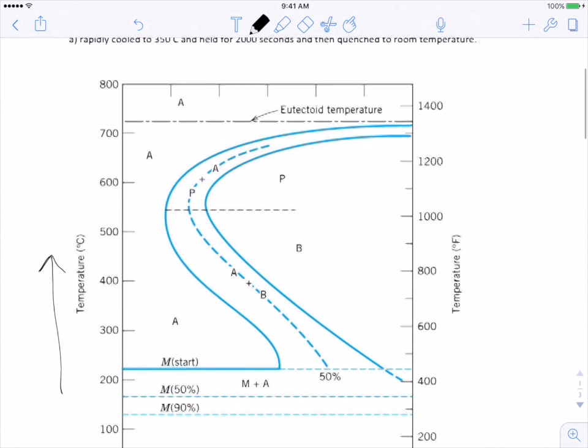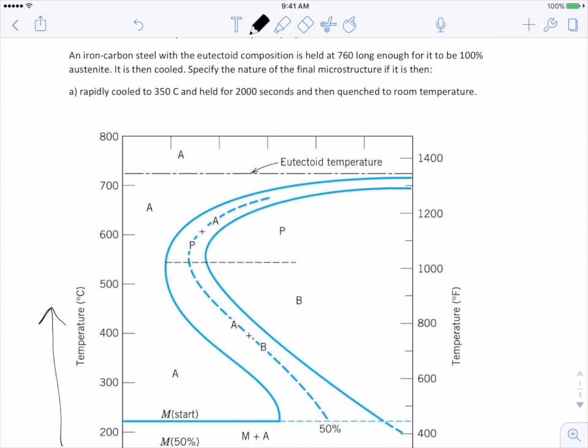Now, this particular diagram is a TTT diagram for an iron-carbon steel with the eutectoid composition. So let's again unpack what that means. On a phase diagram of iron, the eutectoid transformation is occurring when austenite, this gamma phase, transforms through the eutectoid reaction.